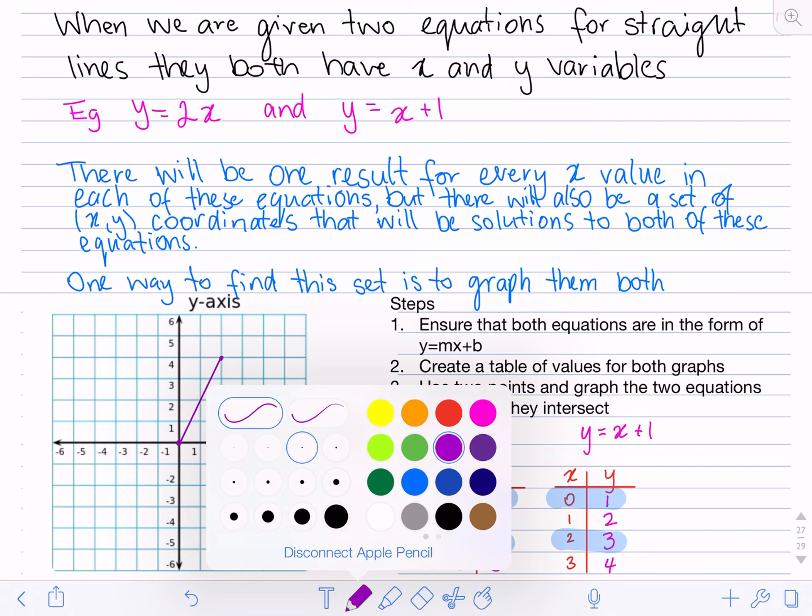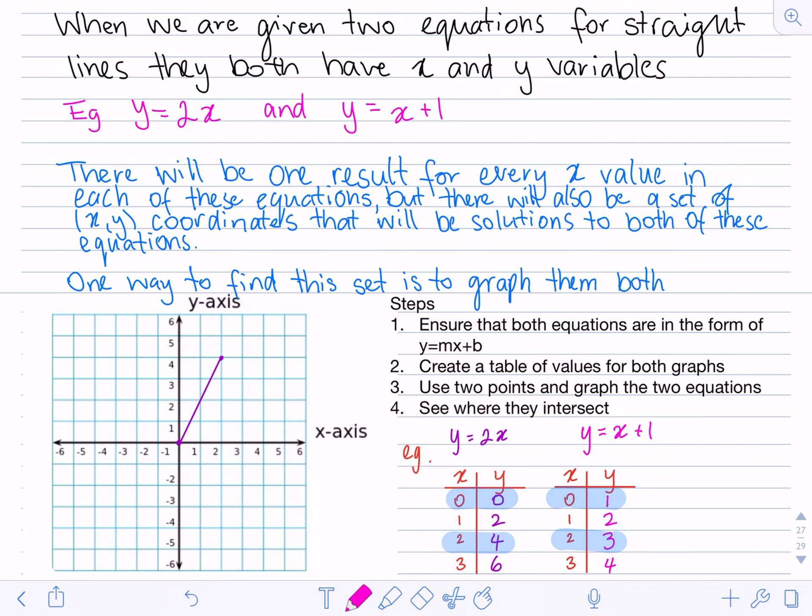Now let's do the pink line. 0, 1, right there. And then 2, 3. So we can join these up here.